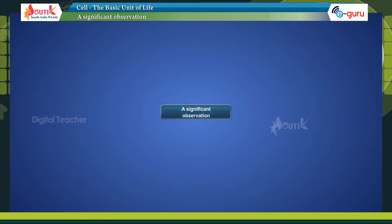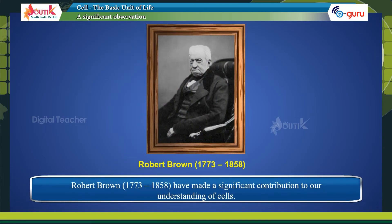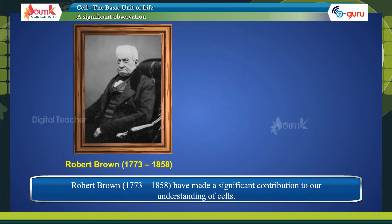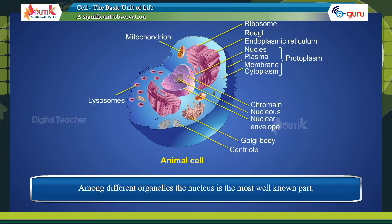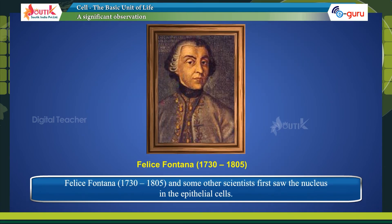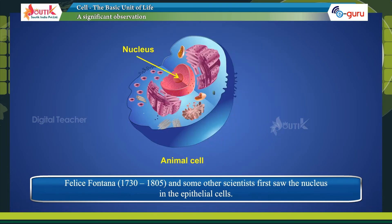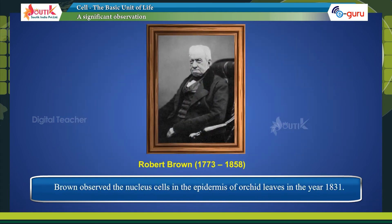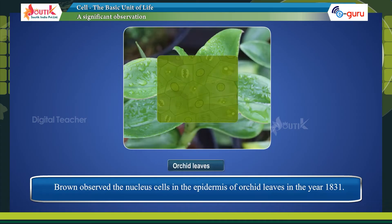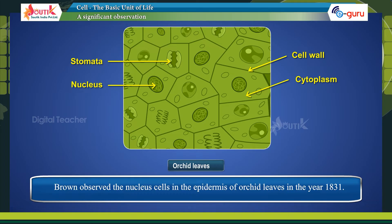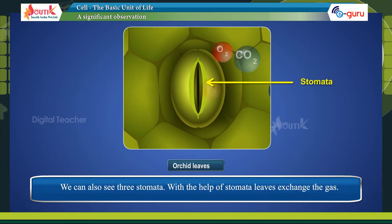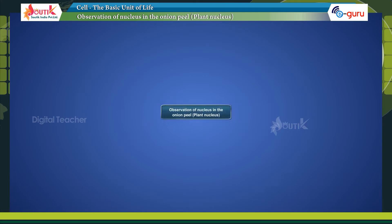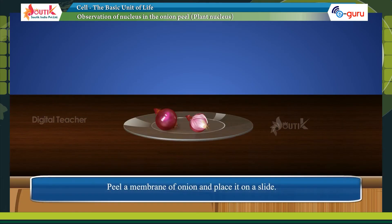A significant observation: Robert Brown made a significant contribution to our understanding of the cell. Among different organelles, the nucleus is the most well-known part. Felice Fontana and some other scientists first saw the nucleus in epithelial cells. Brown observed the nucleus in cells in the epidermis of orchid leaves in the year 1831. We can also see stomata — through which leaves exchange gases.